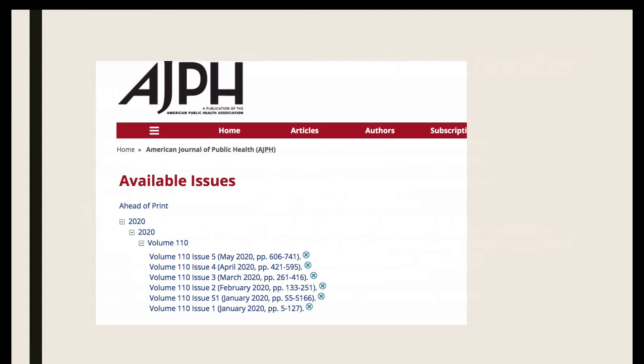So every item that the American Journal of Public Health publishes in 2020 will have the same volume number. We can also see that the January issue is issue one, the February issue is issue two, etc. And in this case there are a few supplemental or special issues included.